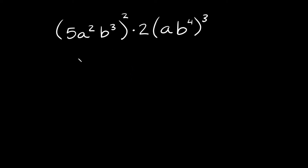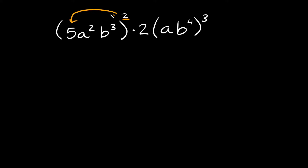So first of all, the product to a power rule — inside of these parentheses we have a product: 5 times a squared times b cubed. That is a product, and then we're raising this whole thing to a power too. The way this works is you take this exponent and it's almost like distributing — you're going to apply it to every single term that's inside of these parentheses. You're going to take this 2 and apply it to the 5, to the a squared, and to the b cubed.